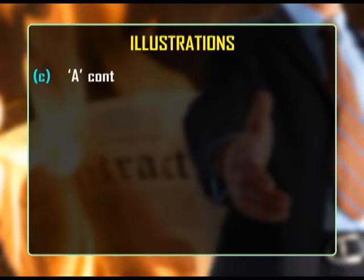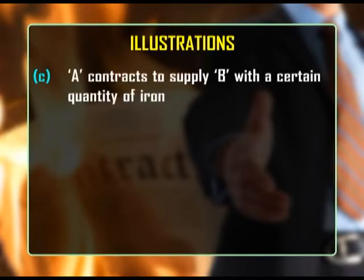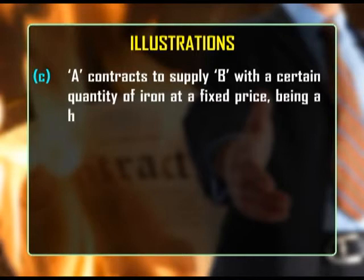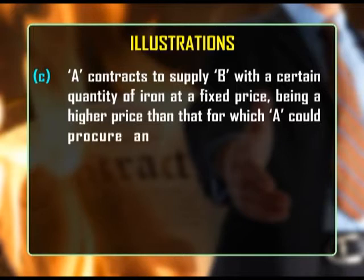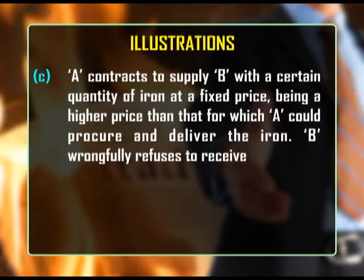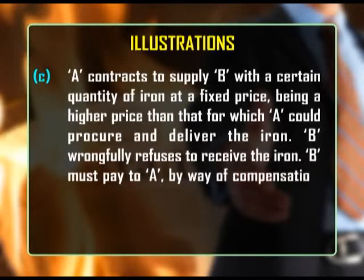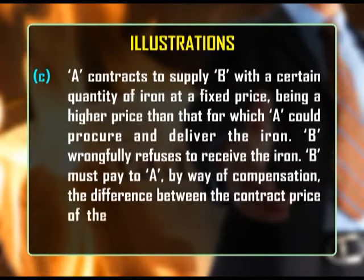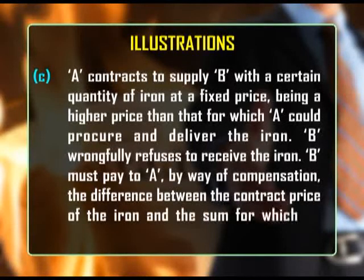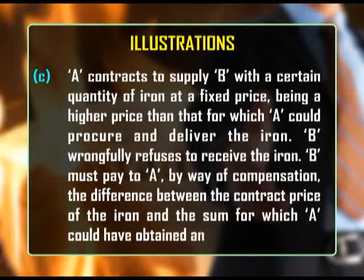Another illustration: A contracts to supply B with a certain quantity of iron at a fixed price, being a higher price than that for which A could procure and deliver the iron. B wrongfully refuses to receive the iron. B must pay to A by way of compensation the difference between the contract price of the iron and the sum for which A could have obtained and delivered it.